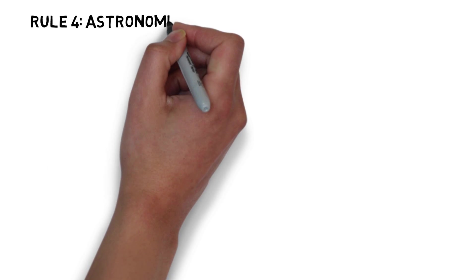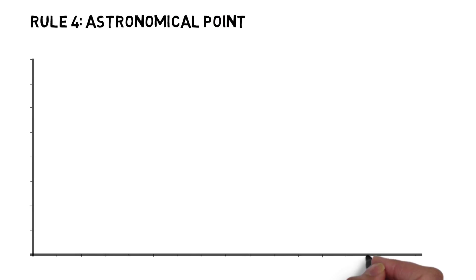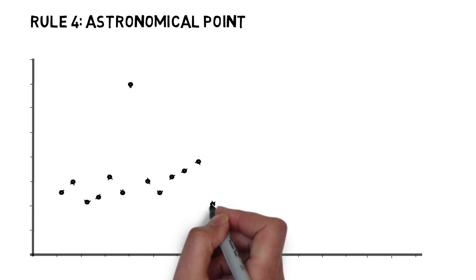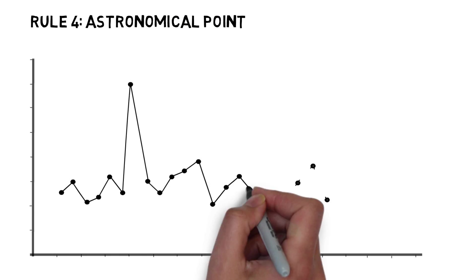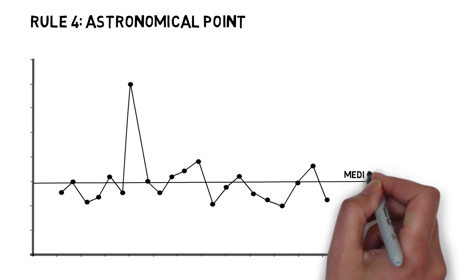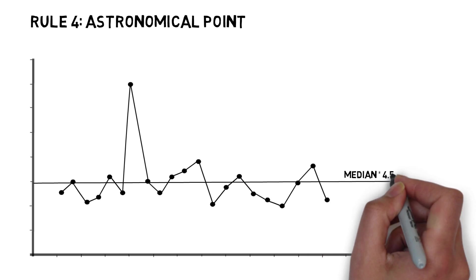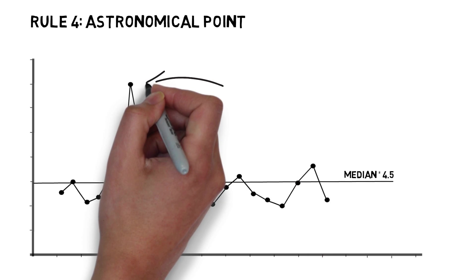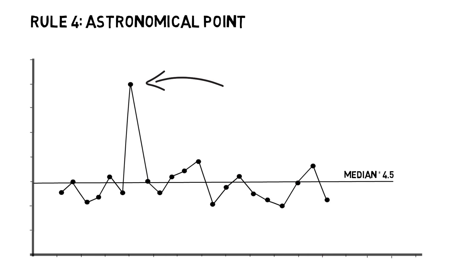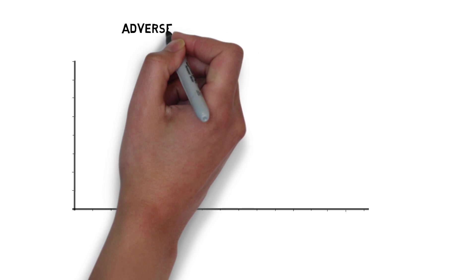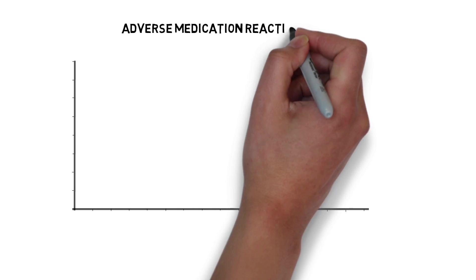Rule 4 is the astronomical point rule. An astronomical point is one that is obviously different and anyone studying the chart would agree that it is highly unusual. It can be either high or low, but it needs to be much higher or much lower than the rest of the points in the chart.